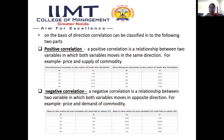On the basis of direction, correlation is classified into two parts. Positive correlation: if both variables move in the same direction — if one variable increases, the other also increases; if one decreases, the other also decreases. For example, price and supply of a commodity — if price increases, supply also increases. Negative correlation: when both variables move in opposite directions — if one variable increases, the other decreases. For example, price and demand of a commodity.